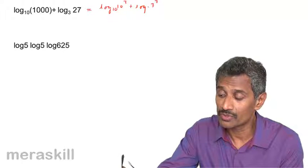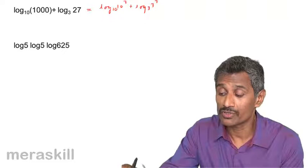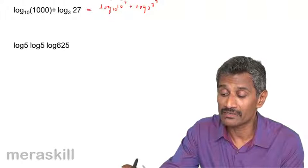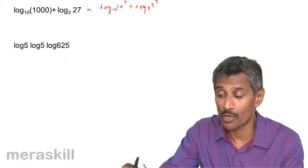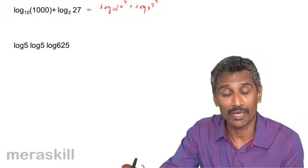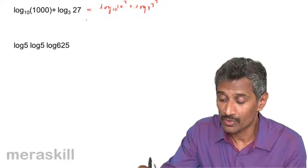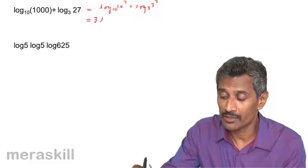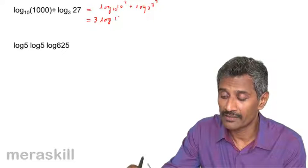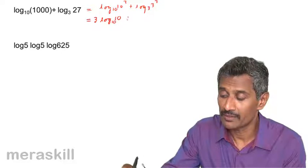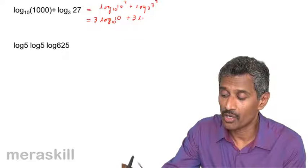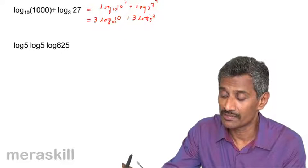Now we use a rule: whenever you take the index, the index becomes the coefficient. That is, log of a raised to m equals m log a. So it's going to be 3 log 10 to the base 10 plus 3 log 3 to the base 3. We've taken the index as a coefficient using the rule that log of a raised to m to the base b is m log a to the base b.